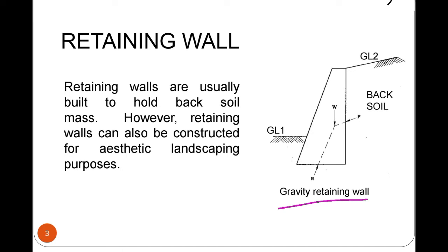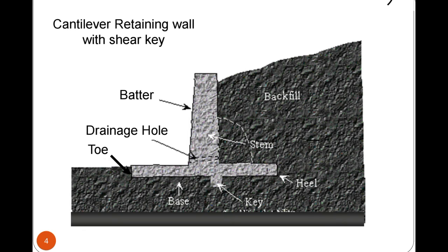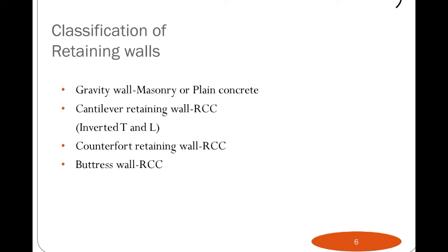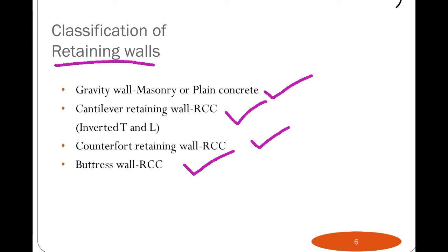The first type is the gravity retaining wall, showing backfill and ground level one and ground level two. Another example is the cantilever retaining wall. In the cantilever retaining wall, there is a stem portion with a batter. A drainage hole is there to drain water from the soil. There is also a heel slab, a toe slab, and a shear key. The shear key mainly prevents the sliding of the retaining wall. There are four types of retaining walls: gravity retaining wall, cantilever retaining wall, counterfort retaining wall, and buttress retaining wall.